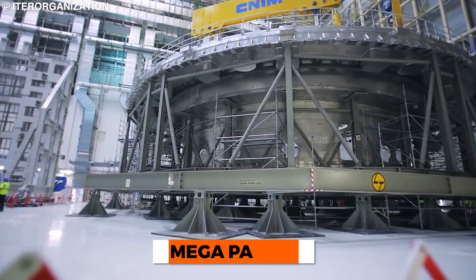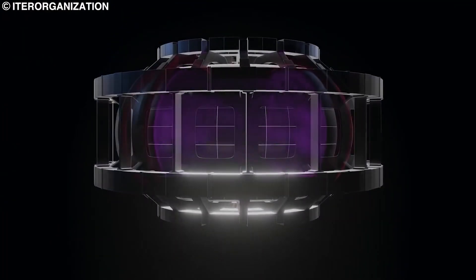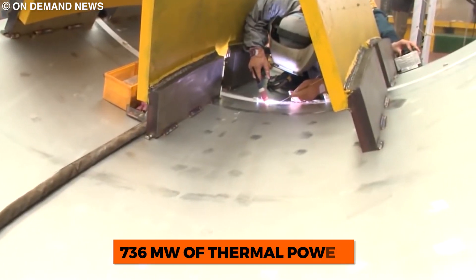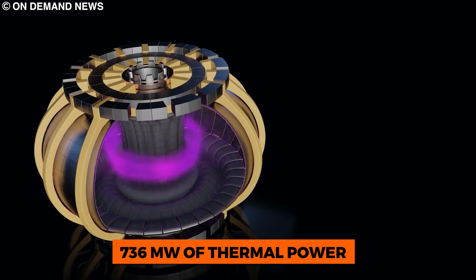ITER will be the first fusion device to operate with an actively water-cooled blanket. The cooling water, injected at 4 megapascals of pressure and at a temperature of 70 degrees Celsius, is designed to remove up to 736 megawatts of thermal power.